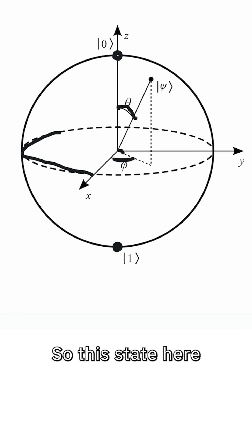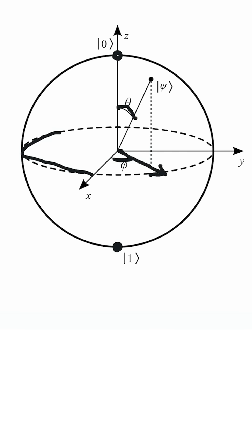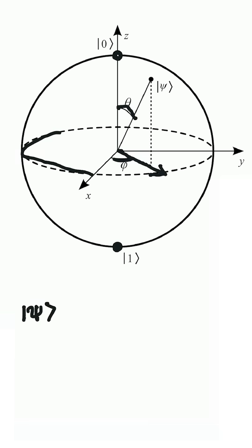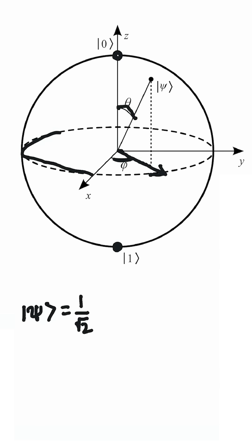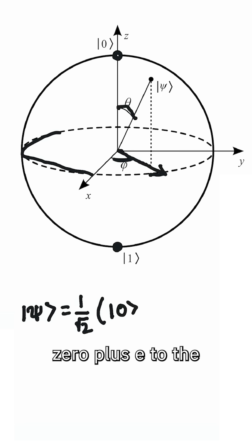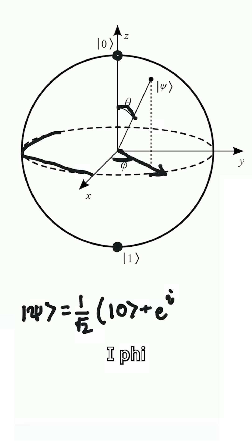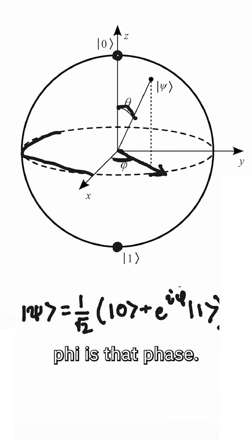So this state here would be equal to one over root two, times zero plus e to the i phi one, where phi is that phase.